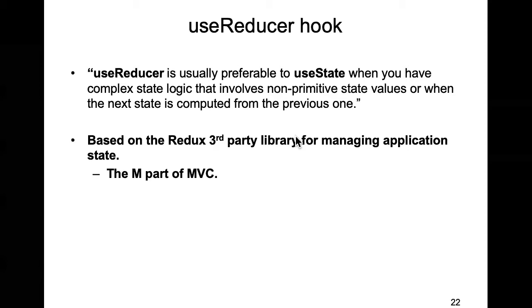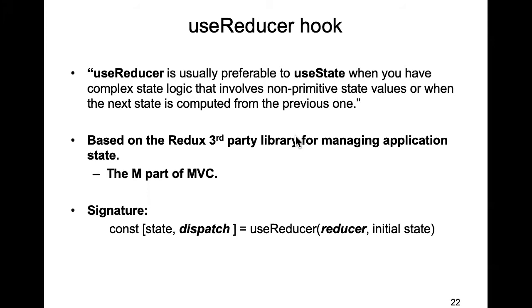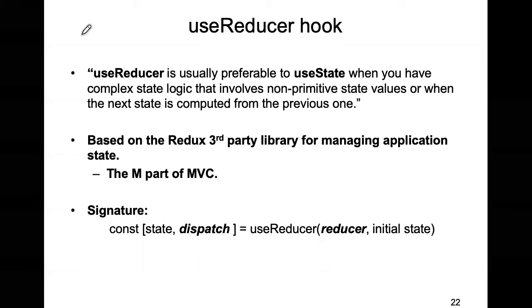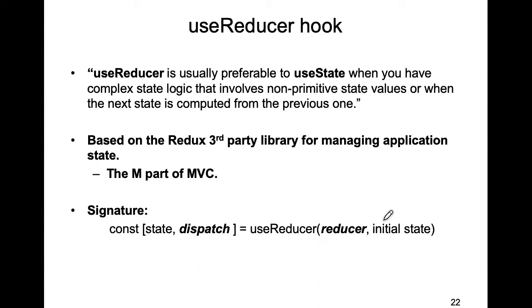In fact, the context that I was talking about the last day is also part of React's approach towards managing model data associated with a React app. Now this useReducer hook — this is how you invoke it. It's quite similar to useState, because it targets the same area. But when you invoke the useReducer hook, you've got to give it the initial value for your state object — it's usually an object, not a primitive. If it was a primitive, we'd probably just use the useState hook.